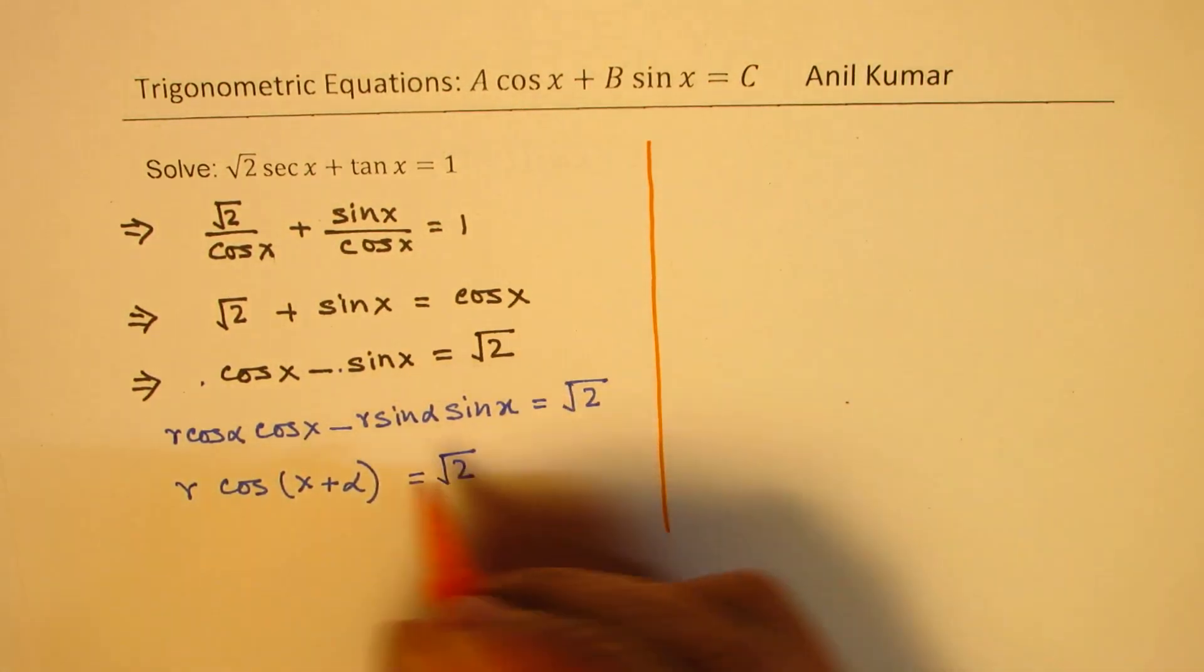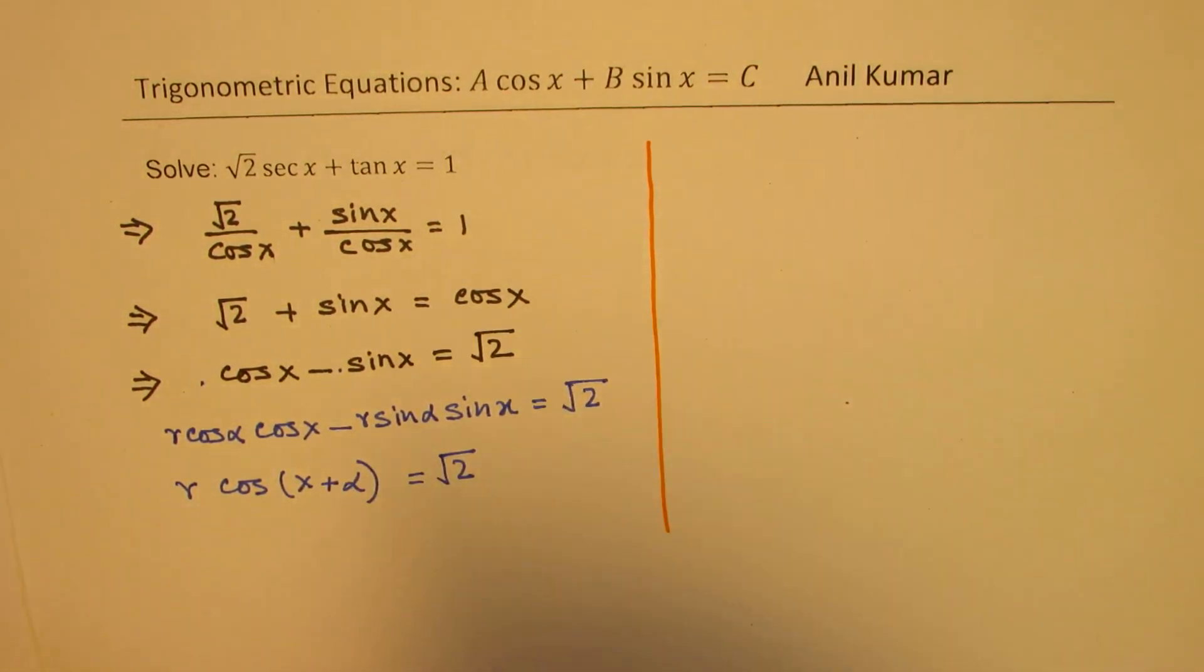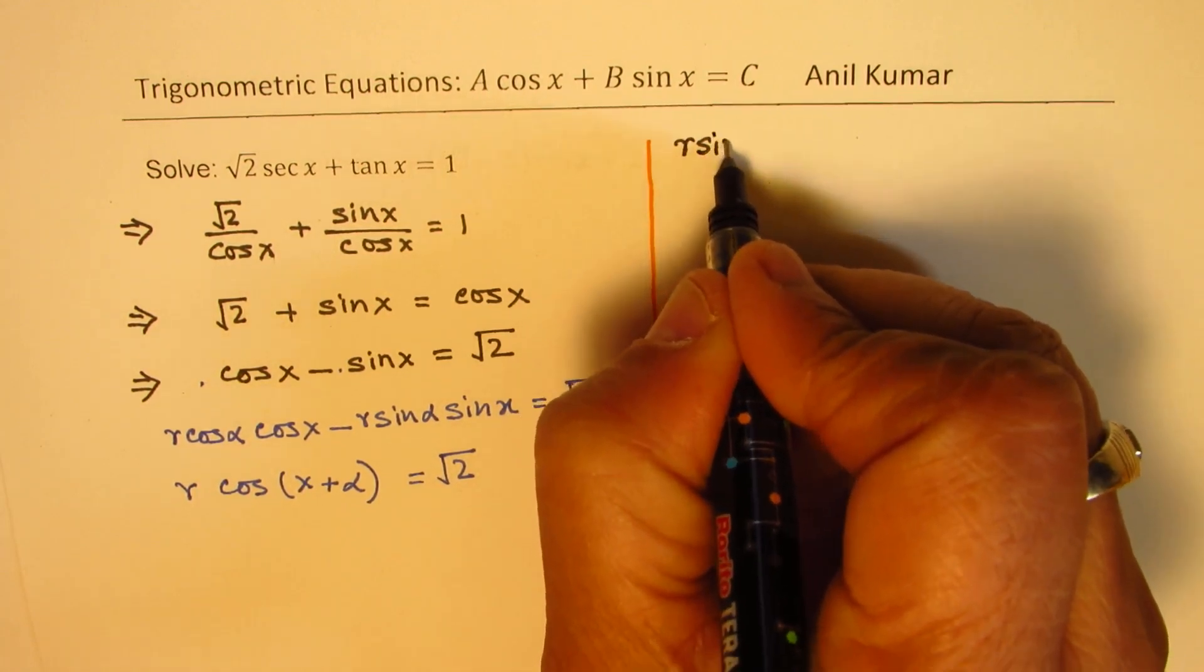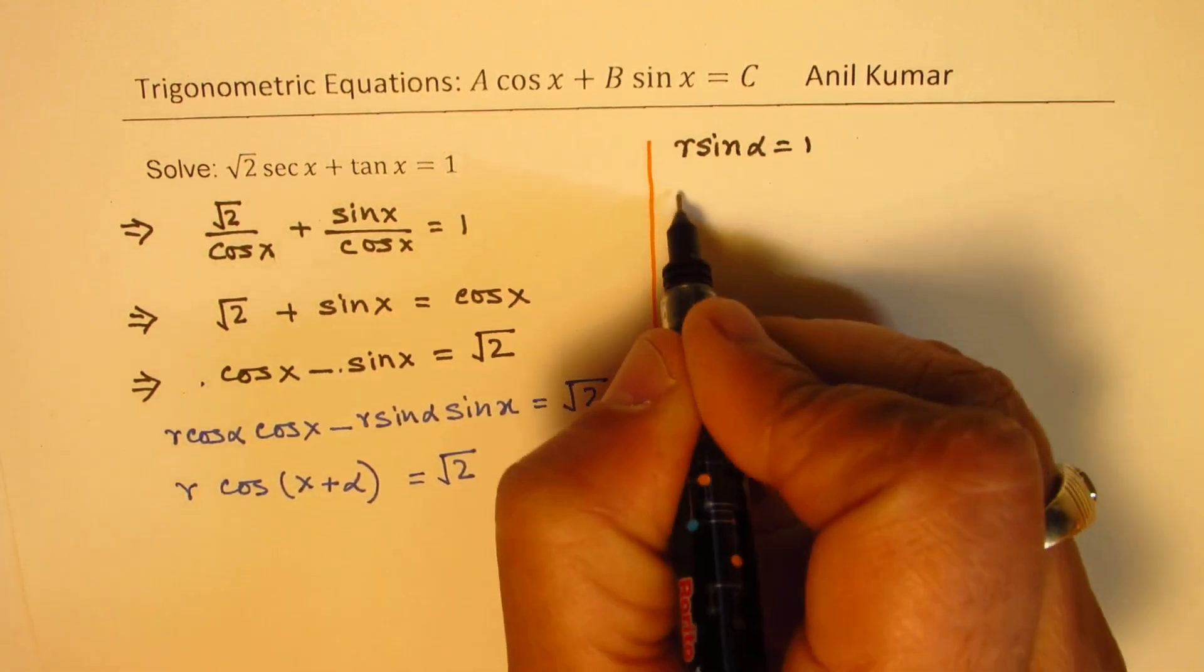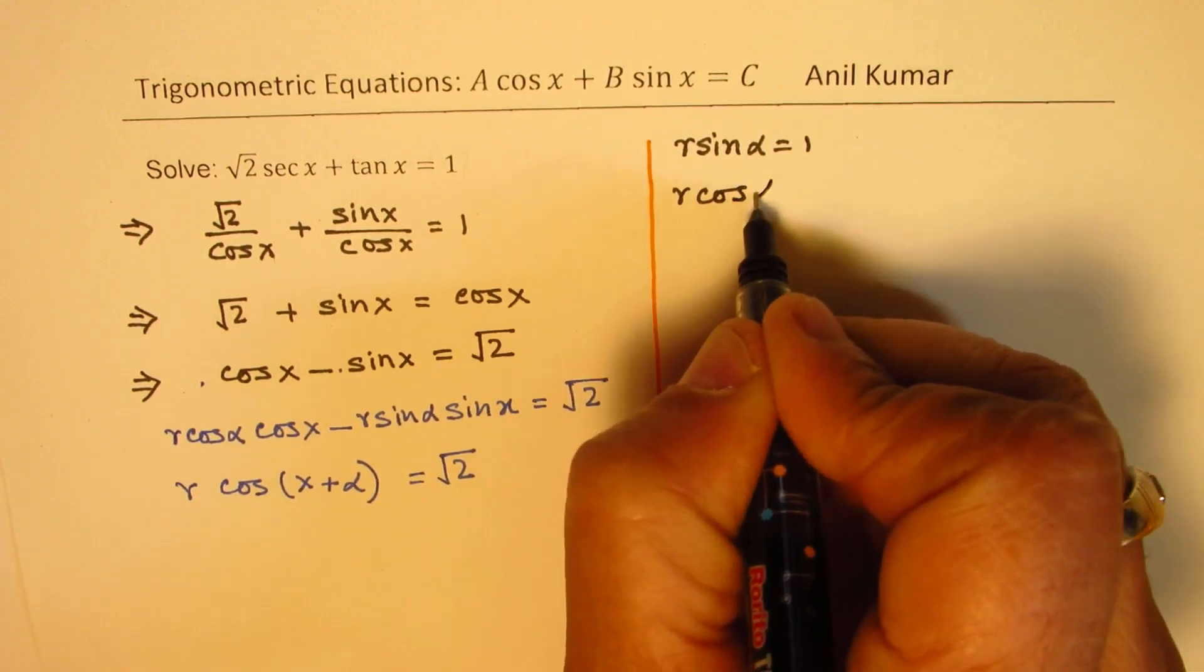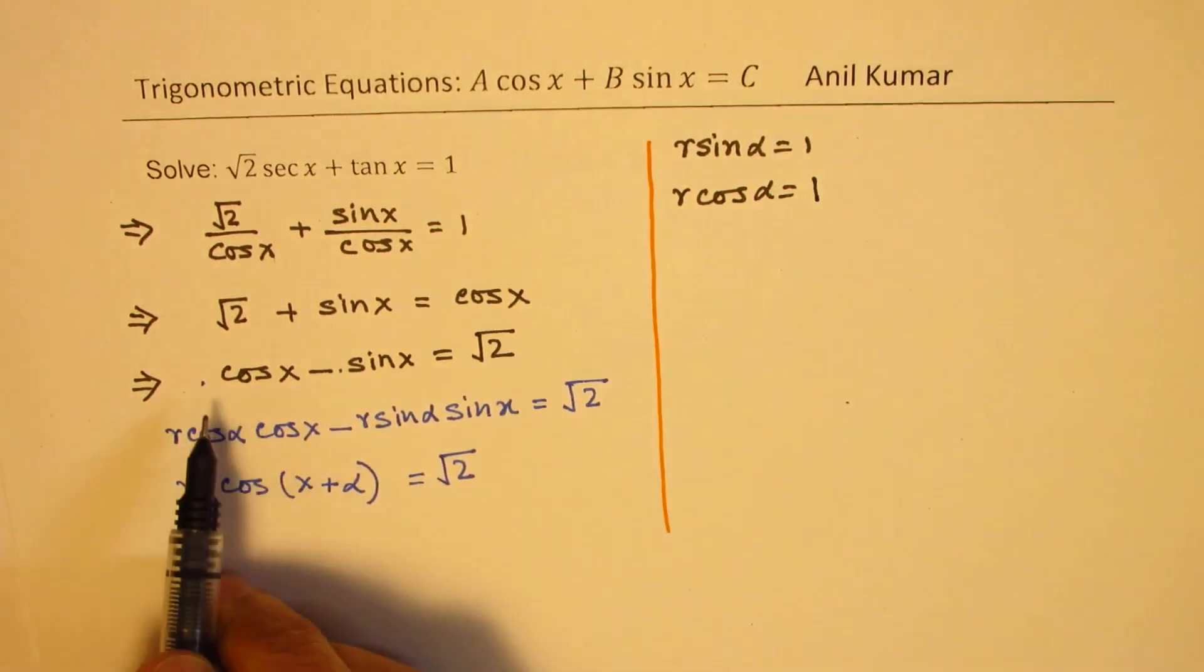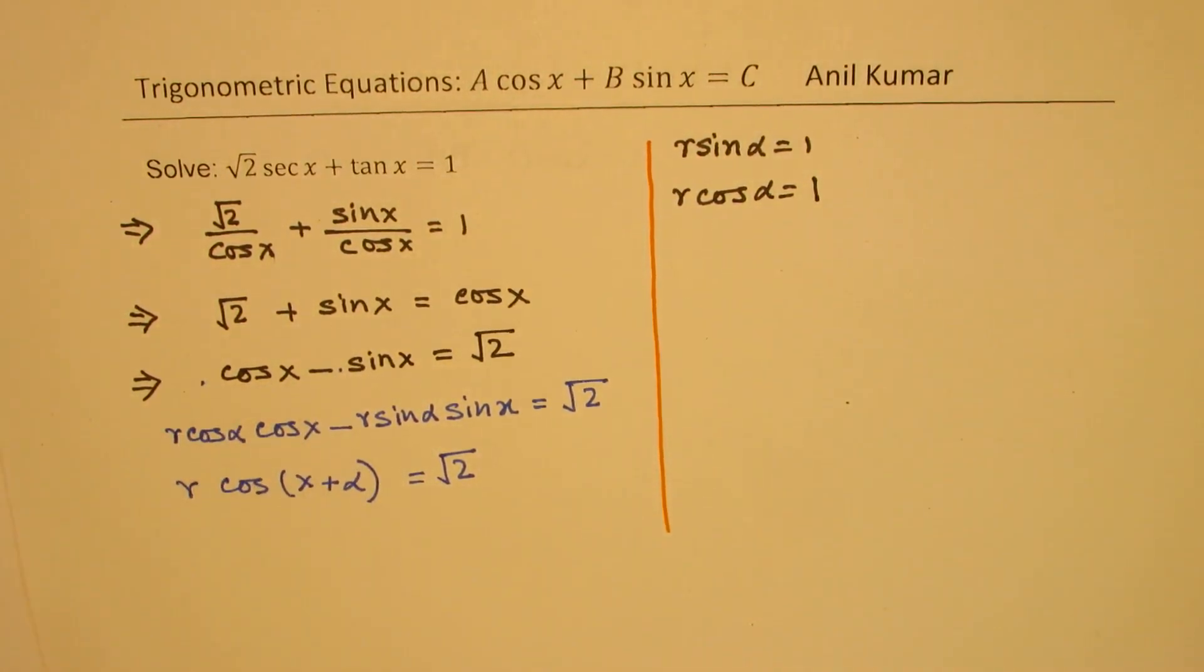So the substitution which we made here was r sin alpha equals to 1 and r cos alpha equal to 1, which are the coefficients of sine and cosine. We maintain this negative sign so that we could write our final solution in terms of cos x plus alpha.